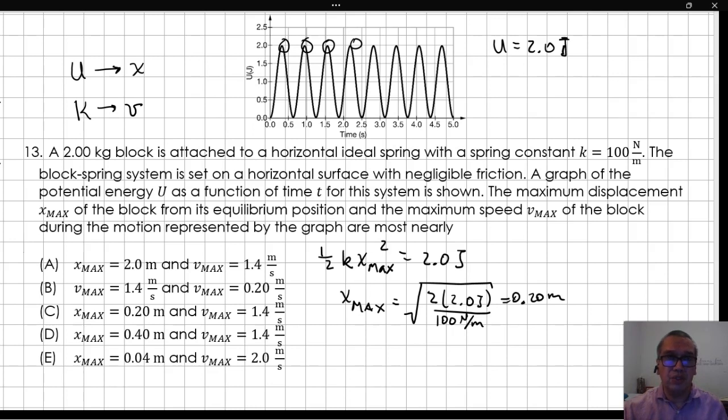We could choose the answer already, but just to be thorough, let us also find Vmax. This system does not have non-conservative forces, so the total mechanical energy is alternating between elastic potential and kinetic energy. Therefore, the maximum kinetic energy is also 2 joules, albeit at other instants in time.